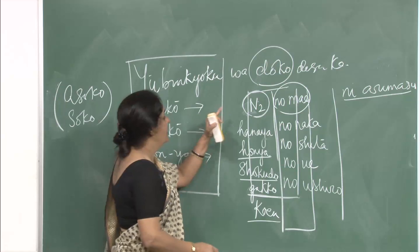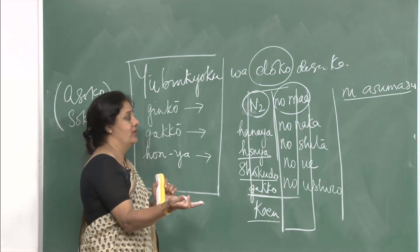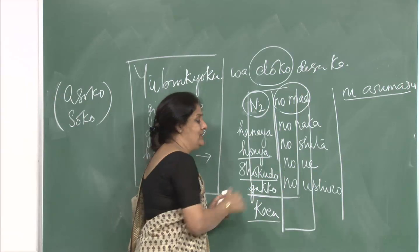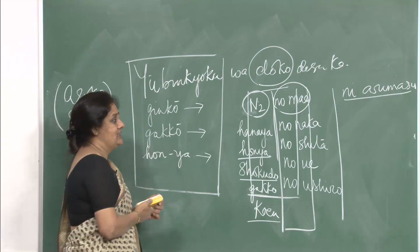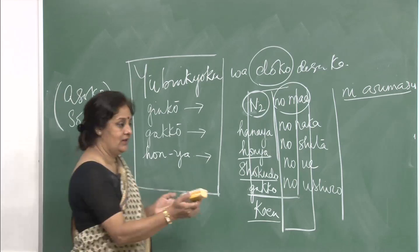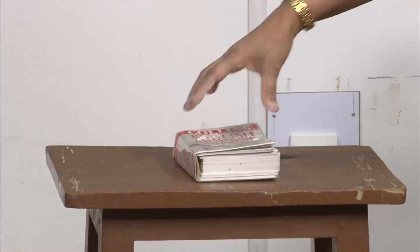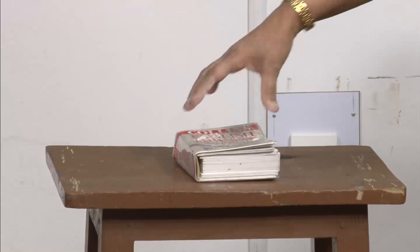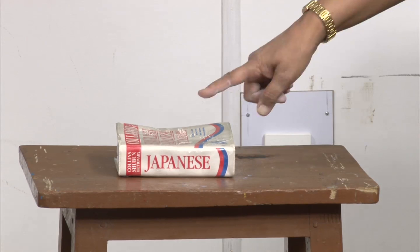The full pattern: Noun 1 wa Noun 2 no ue/shita/naka/mae/ushiro ni arimasu. Shita means below or under, naka means inside, ue means on top, ushiro means behind, mae means front. These are locational nouns listed in this lesson. Jisho — a dictionary — jisho wa doko desu ka? It is on top of the table.